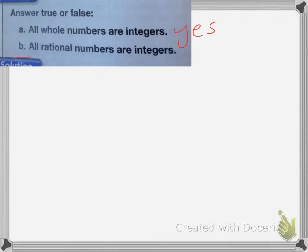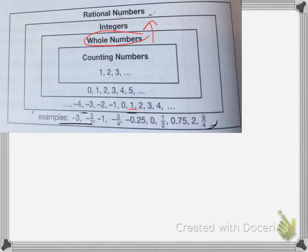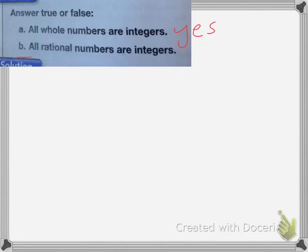Question B says all rational numbers are integers. Looking again, rational numbers are all of the numbers included on the number line. So the answer is false. The first one would be true, and this one is false.